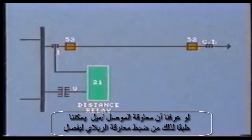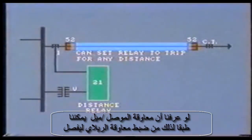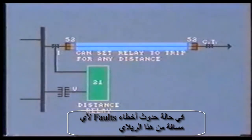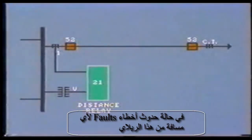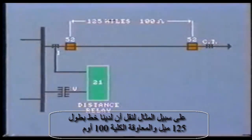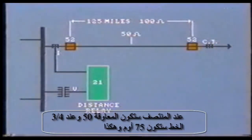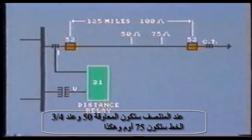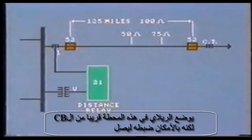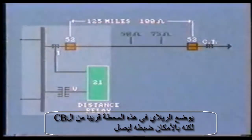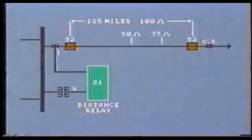If we know the impedance per mile of the line conductors, we can set the impedance relay to trip for faults within any particular distance from the relay. For example, let's say this line is 125 miles long and the total impedance is 100 ohms. At the halfway point the impedance will be 50 ohms, at three-quarter length 75 ohms, and so on. The relay will be installed at this substation, close to the breaker, but it can be adjusted to reach out as far along the line as we wish.